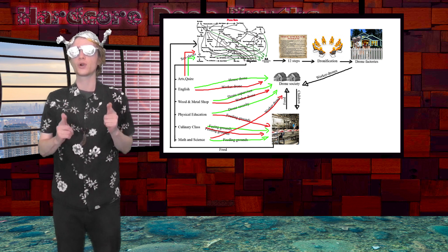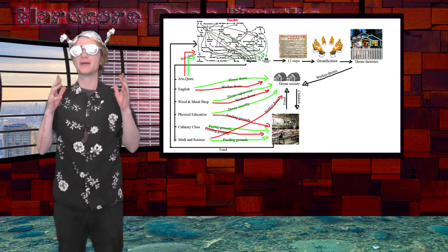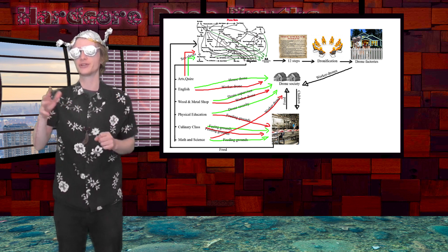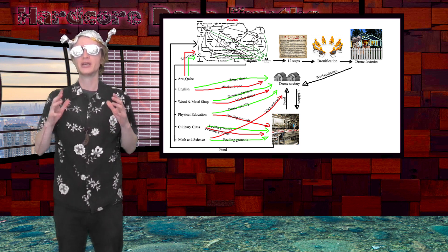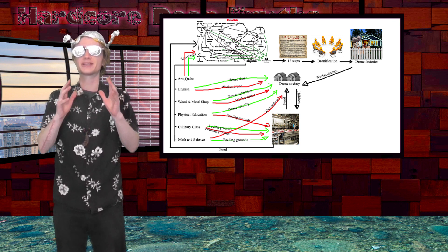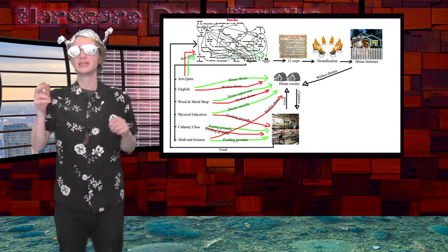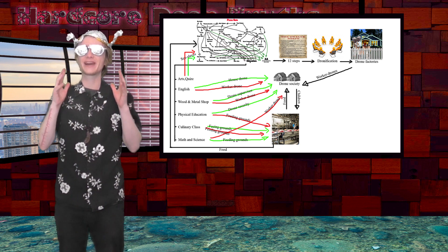If your child is forced into education, make sure he fails math and science class, or he will be sent to the feeding grounds. Make sure to keep them fit, but not so fit that they succeed in gym class, because then they are sent to the mines. And make sure they fail English, because otherwise they will become house drones.